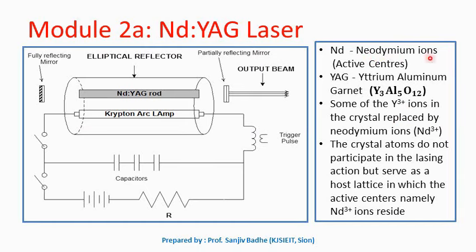In the Nd:YAG laser, neodymium ions are the active centers. They are characterized with a metastable state where the neodymium ions can rest for a long time, and therefore population inversion can be achieved. Yttrium aluminium garnet is a crystal in which some of the yttrium ions are replaced by neodymium ions. It has nothing to do with the lasing action — it just serves as a host lattice in which the active centers, namely neodymium ions, can be placed.